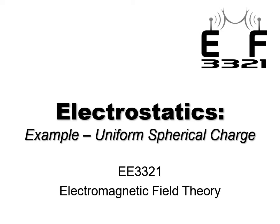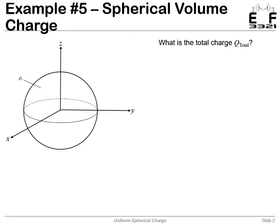Electrostatics, example of a uniform spherical charge. We're drawing a sphere here of some radius r, and it has a uniform charge density throughout its volume, rho v. The first question is, what is the total charge? Step one, draw the problem. We've already done that.